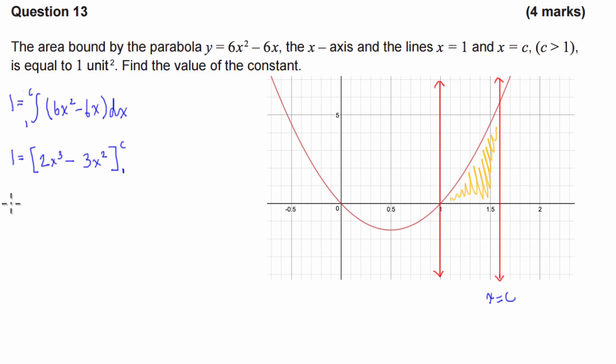So, if we take this definite integral, we have 1 is equal to, sub in the value of c into our integral, so it's going to be 2c cubed, minus 3c squared, subtract 2 times 1 cubed, or 2, minus 3 times 1 squared, 3.